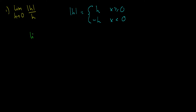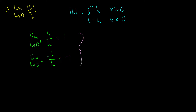The limit as h goes to zero from the right is going to be equal to h over h, which is equal to one. And the limit as h goes to zero from the left will then be equal to negative h over h, which is equal to negative one. Because these are different, we know that the limit does not exist. So this is a very simple question.